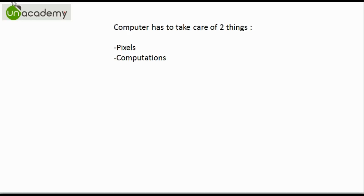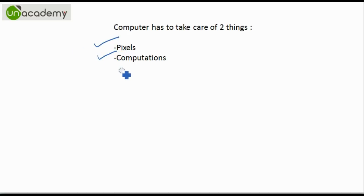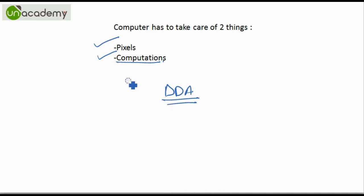A computer has to take care of two things while plotting any line on the computer screen: which pixels to plot, and what computations are required to calculate the pixel positions. The DDA, the Digital Differential Analyzer, is an algorithm that helps the computer find these things.